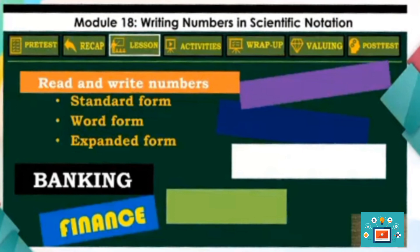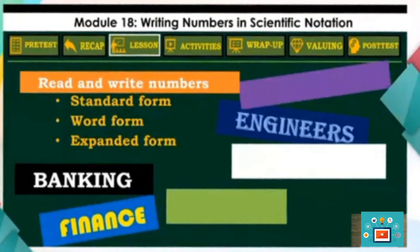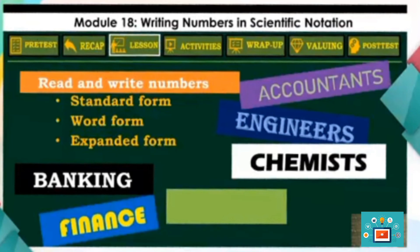There are different professions that deal with the use of very small and very large numbers, such as engineers, accountants, chemists, scientists, and many more. Are you ready to learn a new way of writing numbers?